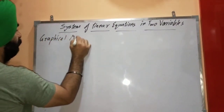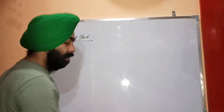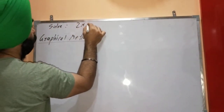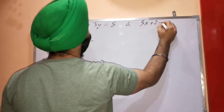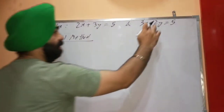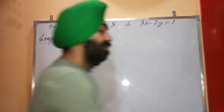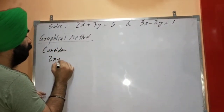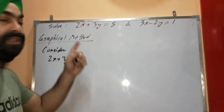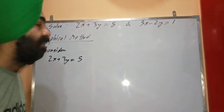Now, first of all, the graphical method. I am going to take a common question for all the methods so you can verify that the solution is the same. We have to solve: 2x + 3y = 5 and 3x − 2y = 1. I am going to solve these two equations by all four methods. For the graphical method, we will consider the first equation, 2x + 3y = 5. As the name suggests, we have to plot this line on a graph.